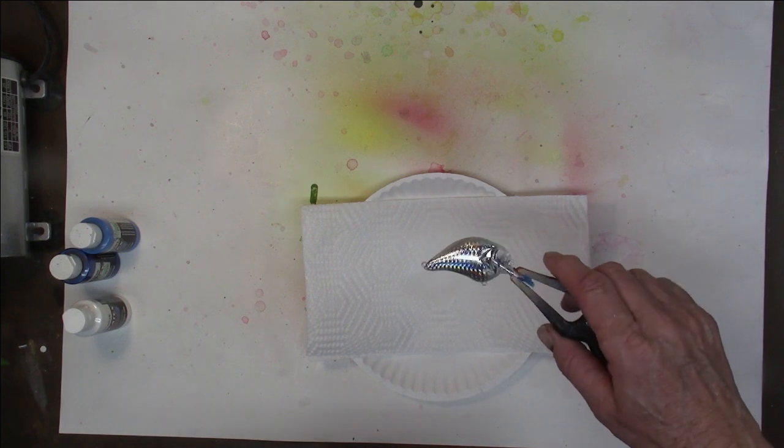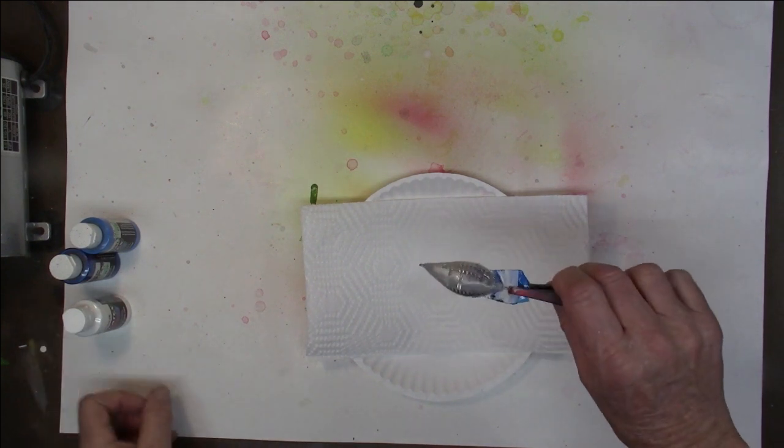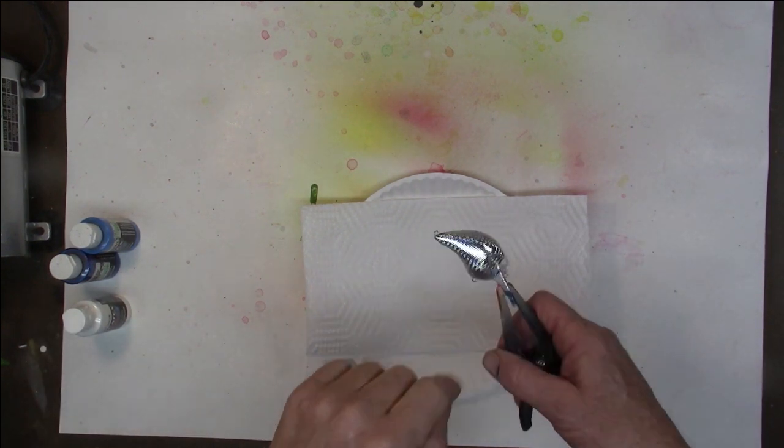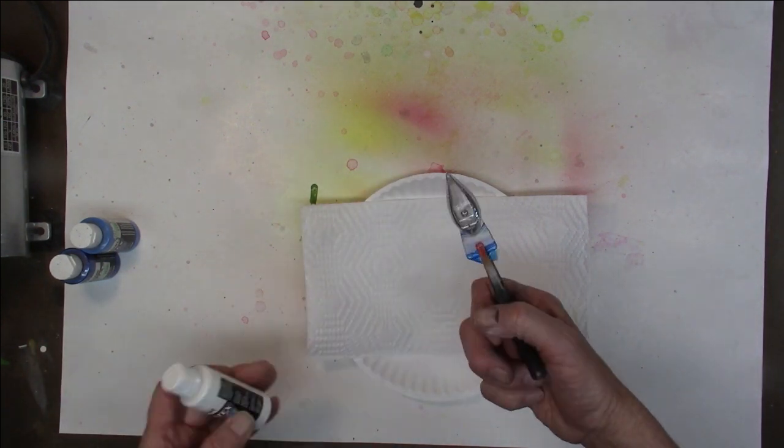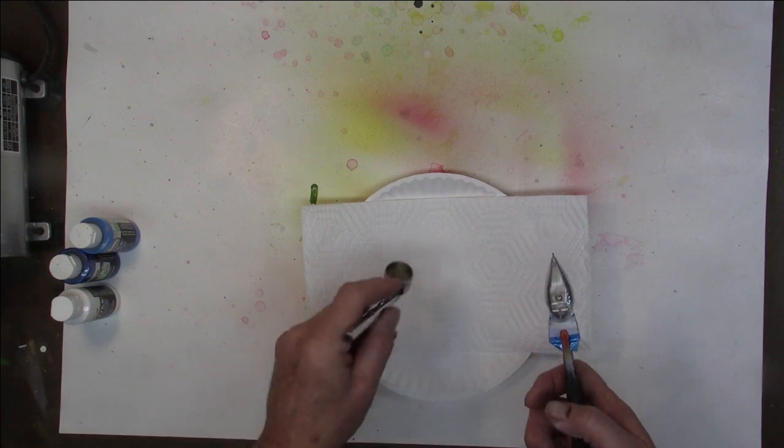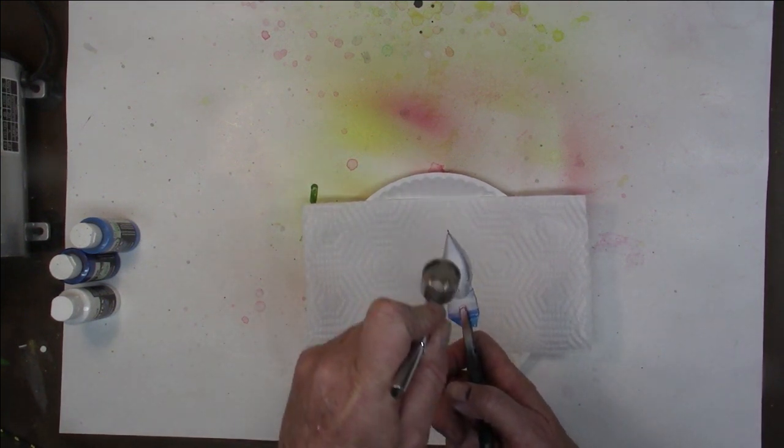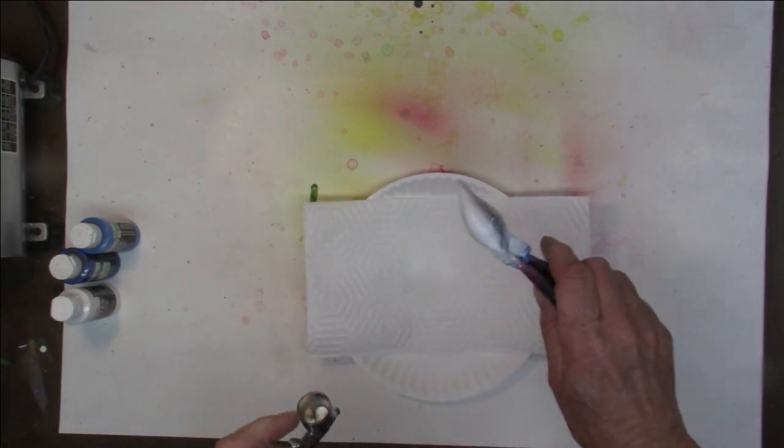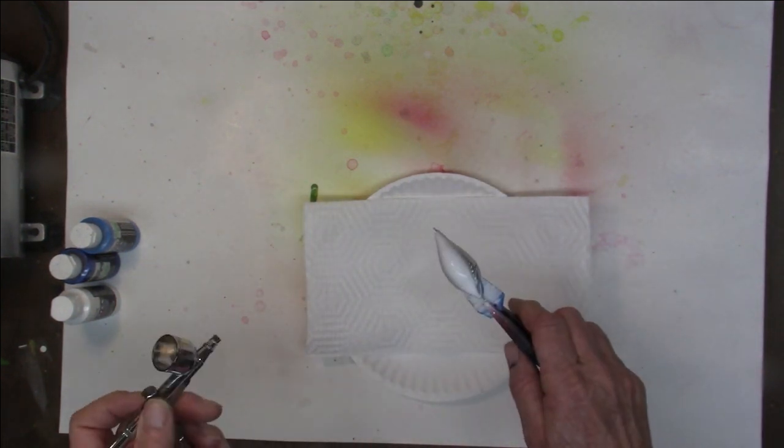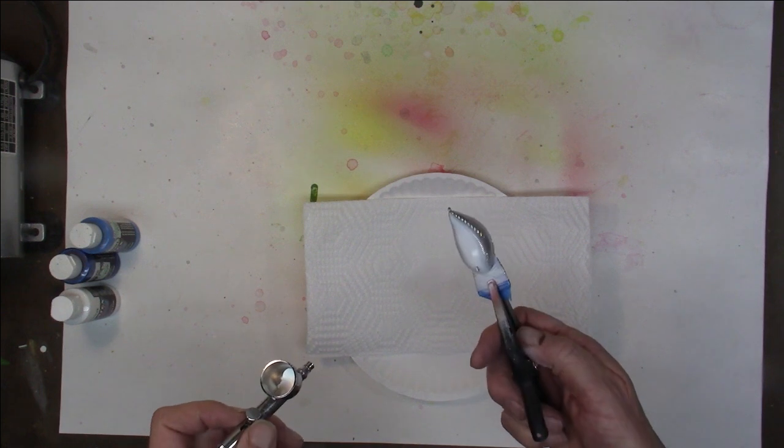All right, we're going to do a blue holographic. Now, as always, to start bottom and top, some Createx opaque white just to give that bottom and top a little coverage. That's all there is to that and now we move on to colors.